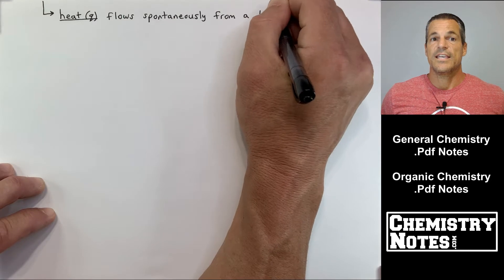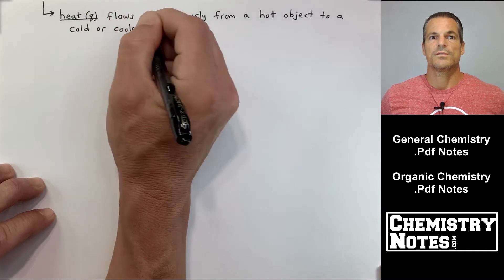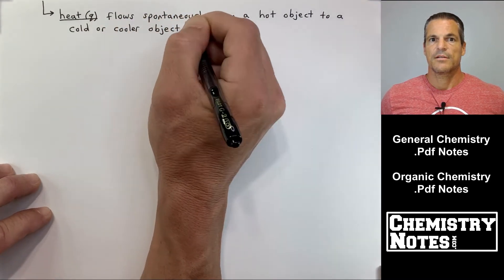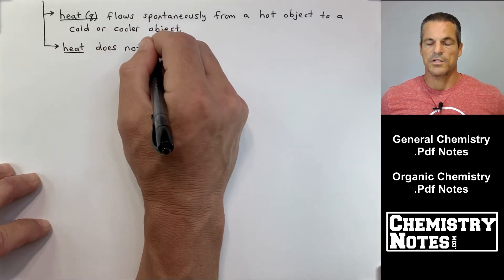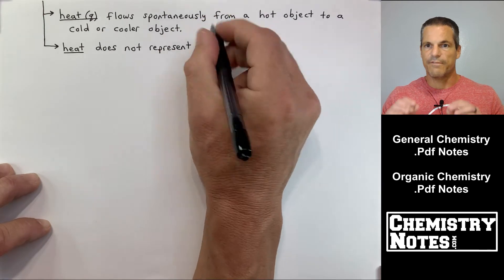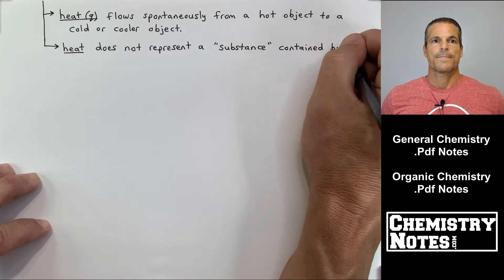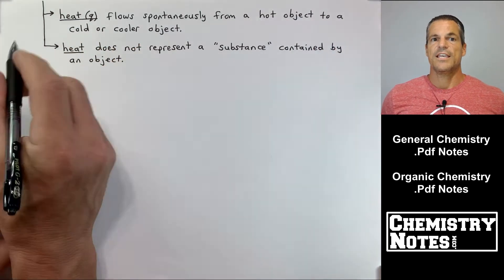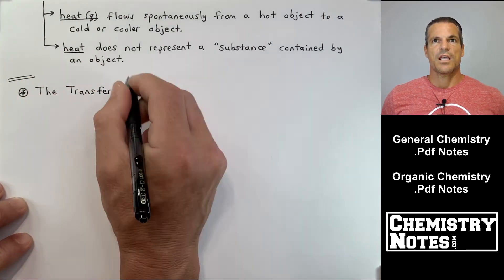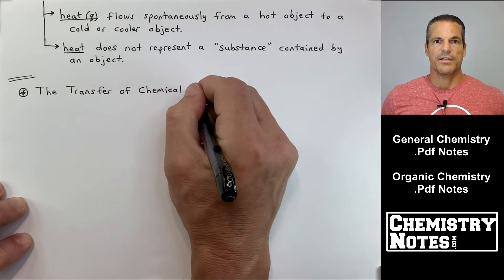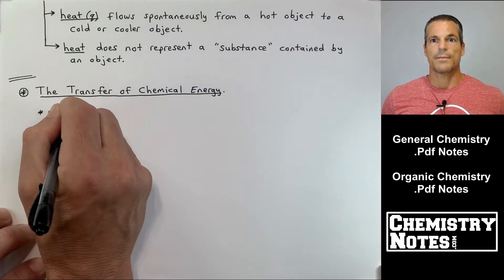So regarding heat, heat, which we've already given the little symbol Q to, heat flows spontaneously from a hot object to a cold or cooler object. Spontaneously means it happens all on its own. You don't have to kind of give it any oomph or any force to make it happen. Heat will naturally flow from a hot object to a cold object. Another thing on heat. Heat does not represent a substance contained by an object. So heat is not a quality or a property of any particular substance or material. Heat is just energy moving from one substance to another.